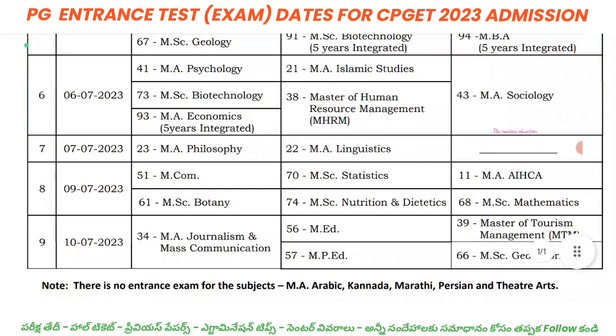After all the main subjects, there are also subjects like Arabic, Kannada, Marathi, Persian, and Theatre Arts. These subjects will also be applied and tested under the CPGET schedule.